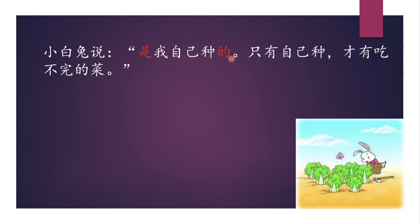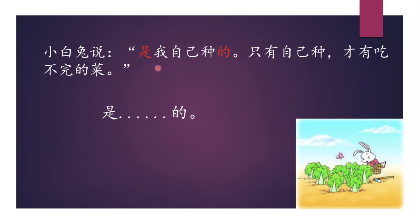小白兔說，是我自己種的。只有自己種，才有吃不完的菜。 是...的 is a sentence structure we use to describe an event that already took place — to describe or inquire about the action's time, place, or manner. For example: 這件衣服是我在北京買的 means I bought this shirt in Beijing. 是我自己種的 — it's the cabbage I planted myself. 只有自己種，才有吃不完的菜 — if you grow the cabbage yourself, you will never run out of cabbage.